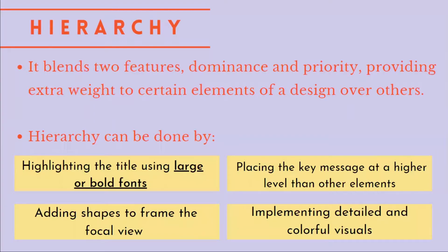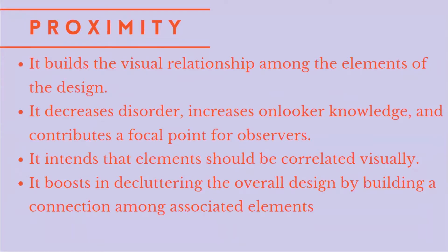Next, hierarchy benefits brands to convey their message to the audience by concentrating on the distinct elements of design. Hierarchy can be done by highlighting the title using large or bold fonts, placing the key message at a higher level than other elements, adding shapes to frame the focal view, and implementing detailed and colorful visuals. Next is proximity, which creates a visual association between principal design elements such as color, font type, or size, guaranteeing the layout is balanced to build a perfect design. Proximity also allows the audience to have an enjoyable and pleasing overview of what they are looking at, thereby contributing to a good user experience.